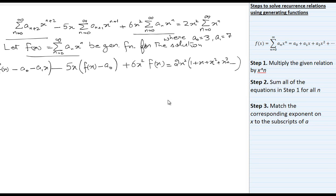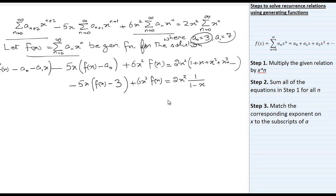The right-hand side becomes 2x² (1 + x + x² + x³ + ...), and as defined, this series equals 1/(1−x). So we have the equation: 6x²f(x) − 5x · (f(x) − a₀) − (f(x) − a₀ − a₁x) = 2x²/(1−x). We know a₀ = 3 and a₁ = 7, so we substitute f(x) − 3 − 7x.